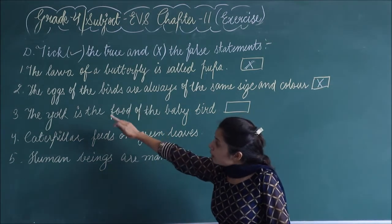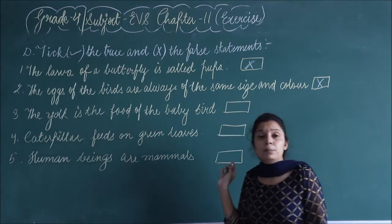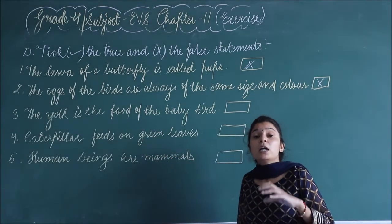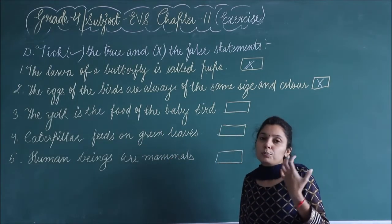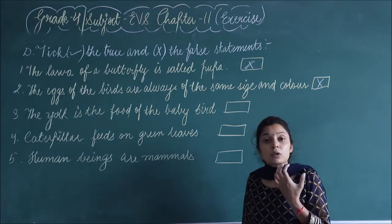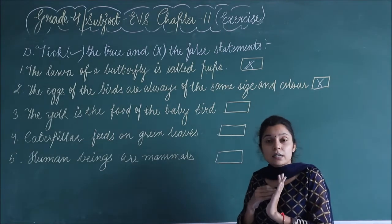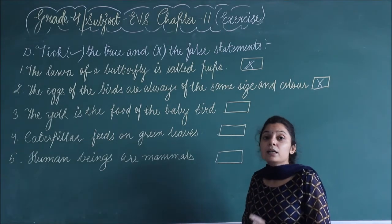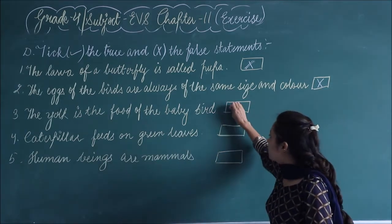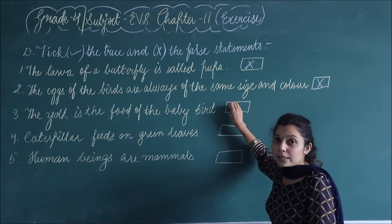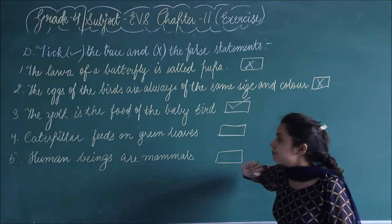Third: the yolk is the food of the baby bird — jab wo egg ke andar hota hai, toh apna food yolk se derive karta hai. This is a correct statement. Baby bird apna food yolk se derive karta hai — yolk is the yellow part. So we will put a tick here.